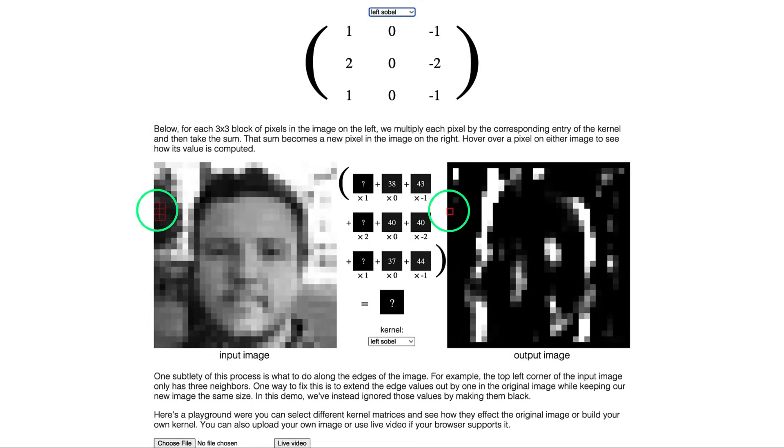As you can see, when the kernel moves from left to right across the image, it's able to detect vertical edges in the input image. Other kernels can also be used to detect different types of edges, for example, horizontal edges or diagonal edges. So that's an example of how 2D convolution is used in image processing.